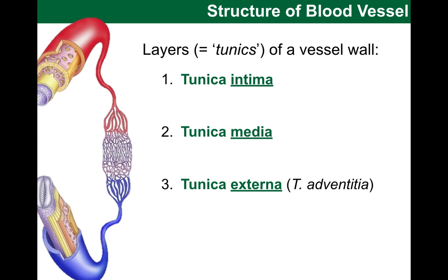We will start our study of these layers from the innermost layer, known as tunica intima. One way to remember its location as the one closest to the lumen — the center of the vessel — is to think that tunica intima is in intimate contact with the blood inside the vessel. Tunica intima's walls are made of simple squamous epithelium, and I will add a link to a video on these tissue types at the end of this video.